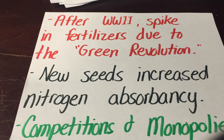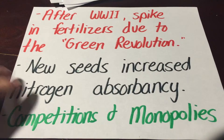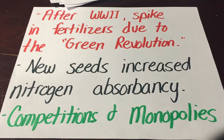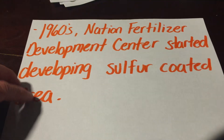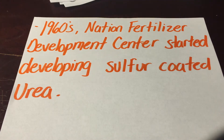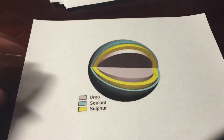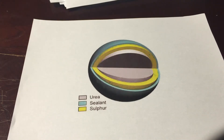New plant seeds increased the ability to absorb nitrogen. After this, many competitions and monopolies were formed, and the mergers and acquisitions from that time are still the fertilizer companies and brands you would see today. In the 1960s, the National Fertilizer Development Center started developing sulfur-coated urea — a urea core sealed with sulfur on the outside.